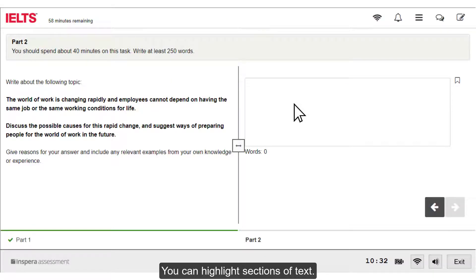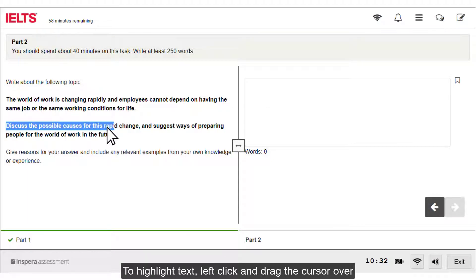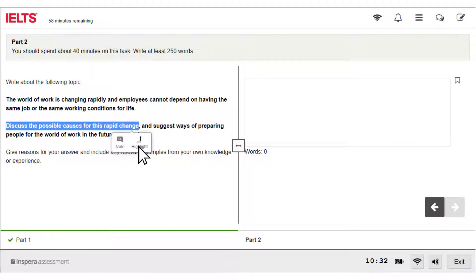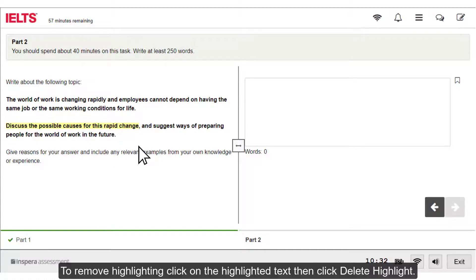You can highlight sections of text. To highlight text, left click and drag the cursor over the section of text you want to highlight, then click highlight. To remove highlighting, click on the highlighted text, then click delete highlight.